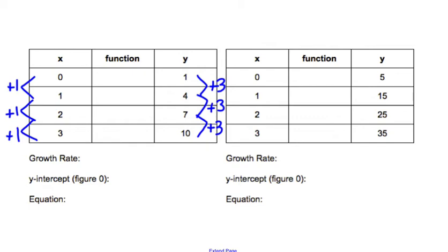That shows us that our growth rate right here is 3. Your y-intercept is the y value when x is 0, that's this part of the table right here. Our y-intercept, or the amount of tiles at figure 0, is 1.